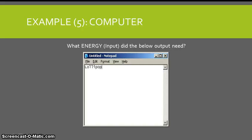Now this is a tricky one. The computer. What energy did the computer use? Well, depends on what we're looking at. We needed electrical energy to switch the computer on, but to be able to type the word lollipop, we needed human energy or movement energy. Somebody had to sit at the keyboard and type in lollipop for it to work.